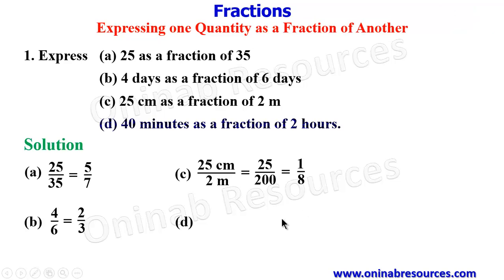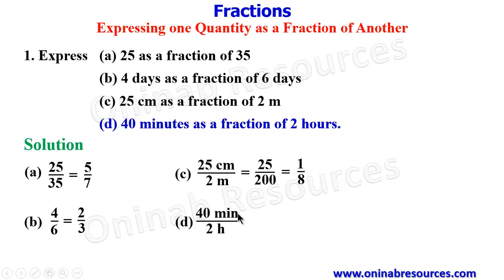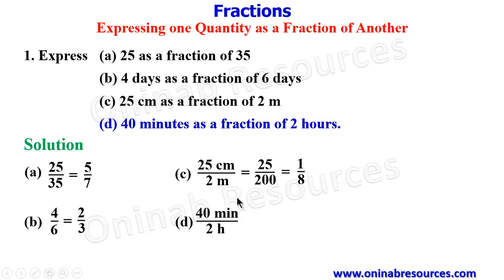We then go for D. For D, we have 40 minutes as a fraction of 2 hours. So 2 hours is going to form the denominator, while the 40 minutes will form the numerator. Since they are not in the same unit, we are going to convert these hours to minutes. Converting 2 hours to minutes: 60 minutes makes 1 hour. Therefore, 2 hours is going to be 60 times 2.